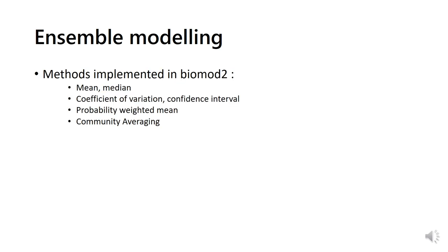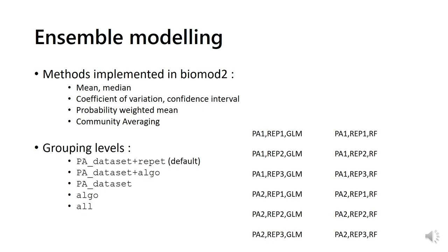In Biomod2, six methods are implemented, allowing you to run several models for one species and then calculate the main trend across the prediction of all of these models, the mean or the median, and the coefficient of variation, calculate the confidence interval around the mean trend, estimate the weighted sum of all models predictions, weighted by the selected evaluation method scores, and estimate the committee averaging scores of all models, that is the average of all binary predictions. All these computations can be made at different grouping levels, depending on the outcome expectations.